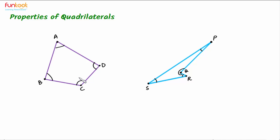In quadrilateral ABCD, angles A and C are opposite angles, and angles B and D form the other pair. In quadrilateral PQRS, opposite angles are angle P and angle R, and angle S and angle Q form the other pair. Consecutive angles include angle P and angle Q, angle Q and angle R, angle R and angle S, and angle S and angle P.